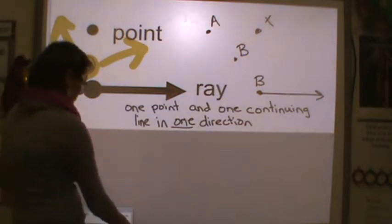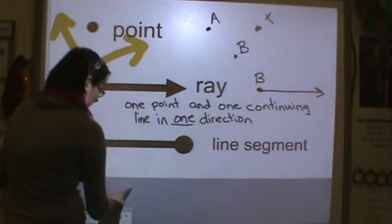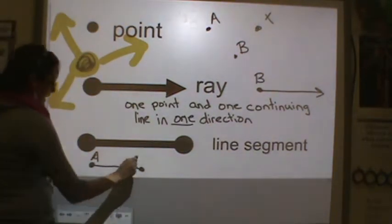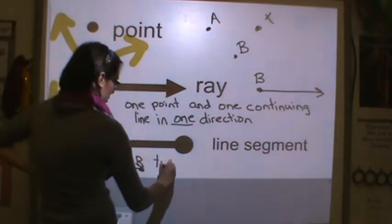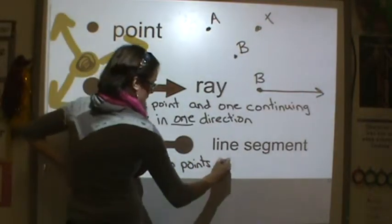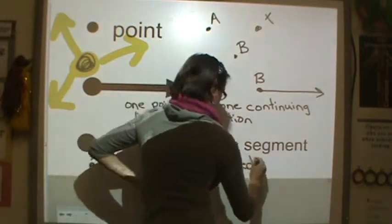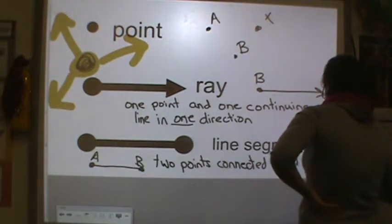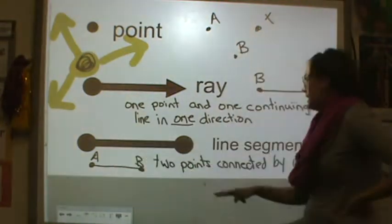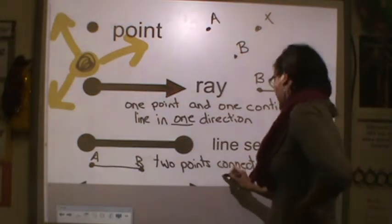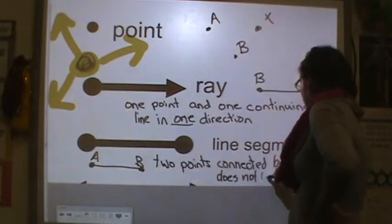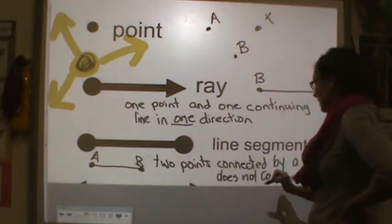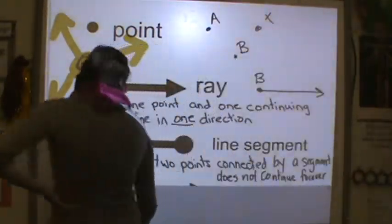Moving on, a line segment can look like this — you'd have a point, a dash, and a point. It could be called line segment AB. A line segment is two points connected by a segment. It does not continue on forever — it stops. The line segment has two endpoints where it stops.